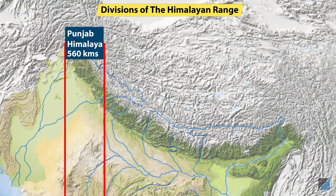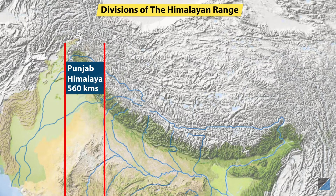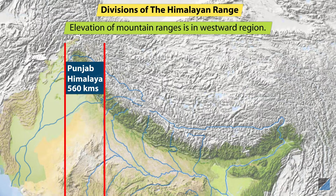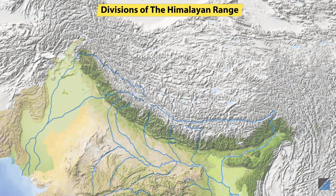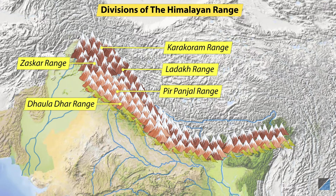A large portion of Punjab Himalayas is in Jammu and Kashmir and Himachal Pradesh. Hence, it is also known as the Kashmir Himalaya and the Himachal Himalaya in the respective regions. The general elevation of the mountain ranges in this region is westwards. Karakoram, Ladakh, Peer Panjal, Zaskar and Dhauladhar are the major ranges in this section.